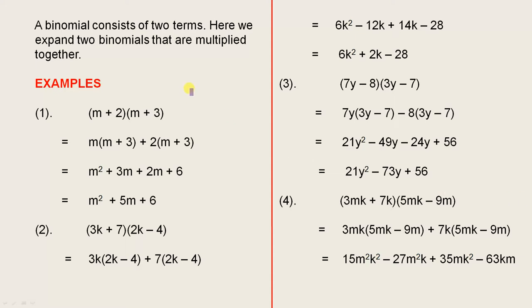Let's have a look at four examples to see how this works. For example 1, we have m plus 2 multiplied by m plus 3. This is a binomial because it has two terms, and that is a binomial because it has two terms, and those binomials are multiplied together.